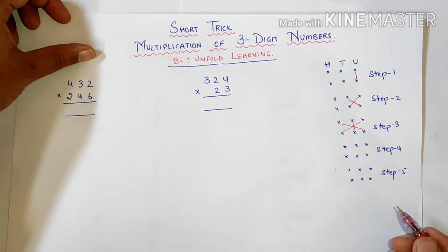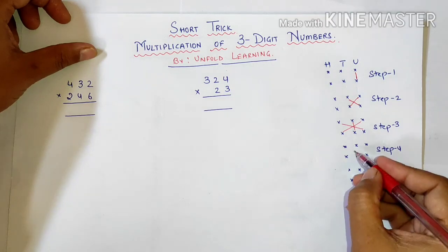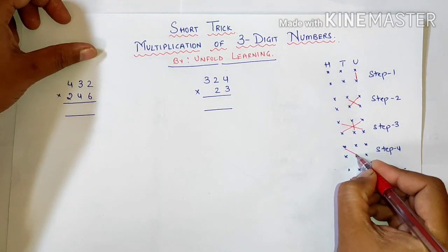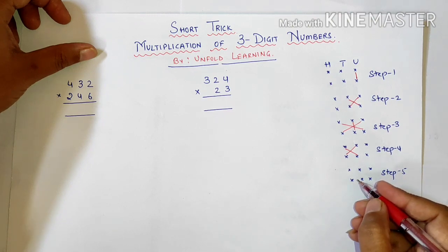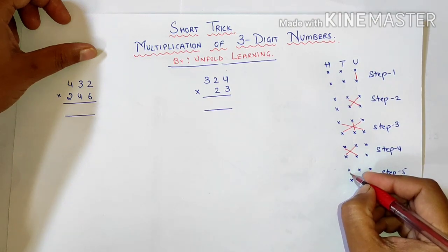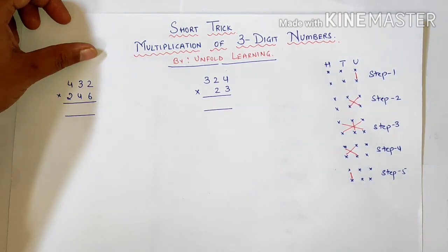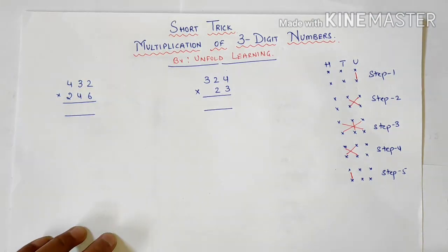And the tens and tens place. In the next step we will multiply the tens to hundreds place. So following these steps you can simply multiply 3-digit numbers in a single line.